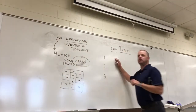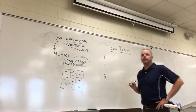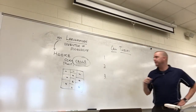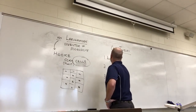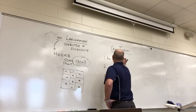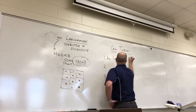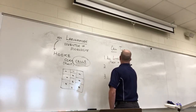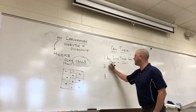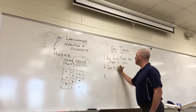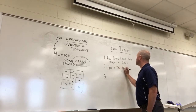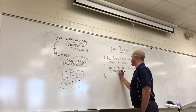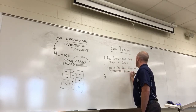A little while later, we eventually arrived at what we call cell theory. There are three parts to it. The first two are easy to grasp: all living things are made of cells - that's the first one, and in the 21st century that makes a lot of sense. The second is that the cell is the basic unit of structure and function for life.